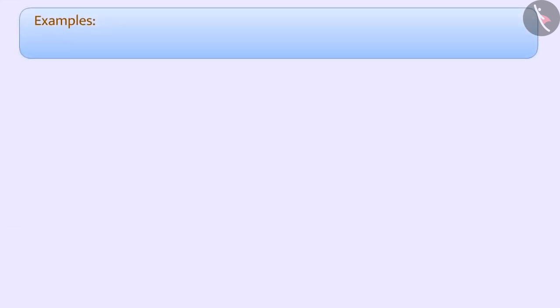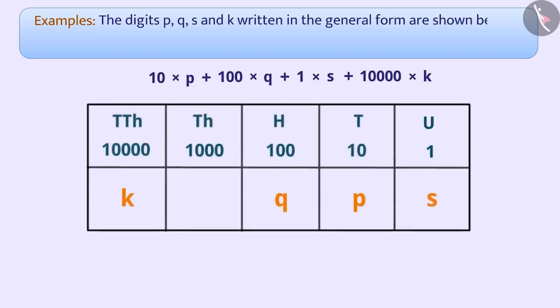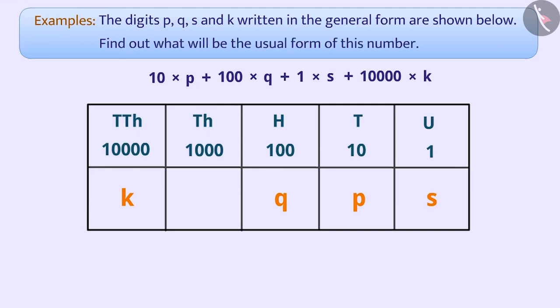Example 3. The digits p, q, s, and k written in the general form are shown below. Find out what will be the usual form of this number. Stop the video and try first.